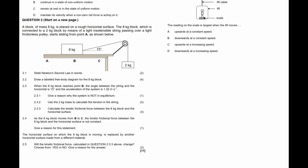Inertia is the tendency of an object to — and we know that inertia is essentially a statement of Newton's First Law, which says that when an object is not acted upon by a net force, the object continues in its state of rest or uniform motion. So option C is correct, and option D — 'maintain its velocity when a non-zero net force is acting on it' — is also acceptable. Options C and D are both correct because inertia is essentially a restatement of Newton's First Law.